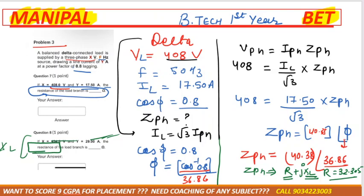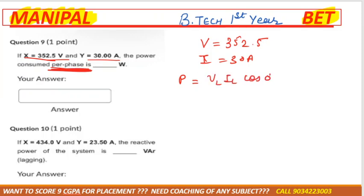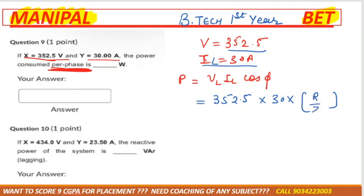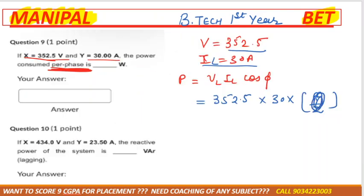From this same problem 3, question 9: voltage is 352.5 volt and current is 30 ampere. They ask power consumed per phase, so we use VL × IL × cos φ. VL = 352.5, IL = 30 ampere, and cos φ = 0.8 lagging (directly given, so no need to recalculate).